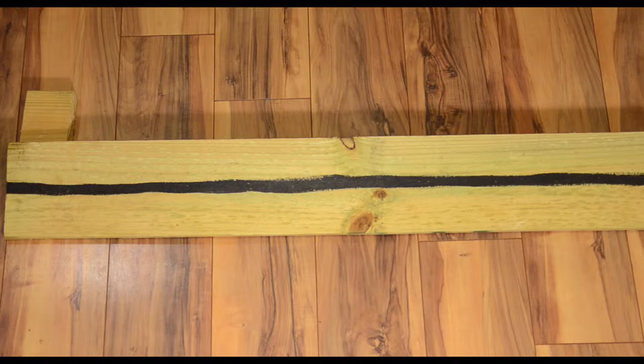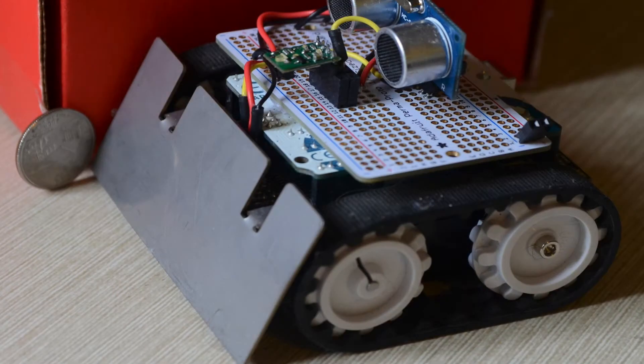So what I want to show, I've got a piece of wood with a black line painted down the center of it to serve as the path or the roadway for a track driven robot.